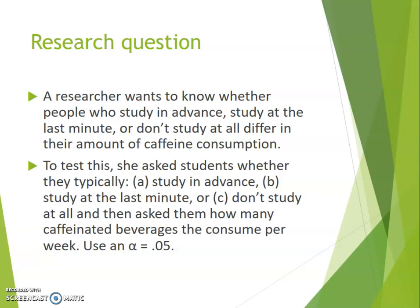The reason we use a one-way between subjects ANOVA is: first, the 'one way' refers to how many factors you have. In this example, we're looking at the effect of one factor — a quasi-independent variable — which is whether students are studying in advance, at the last minute, or not at all. We're looking at the effect of that factor on our dependent variable, which is the number of caffeinated beverages consumed per week, measured on a numeric scale.